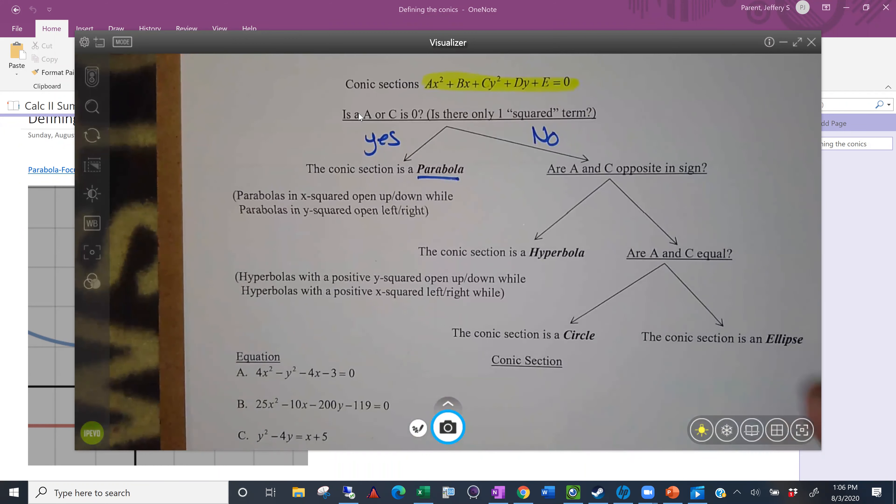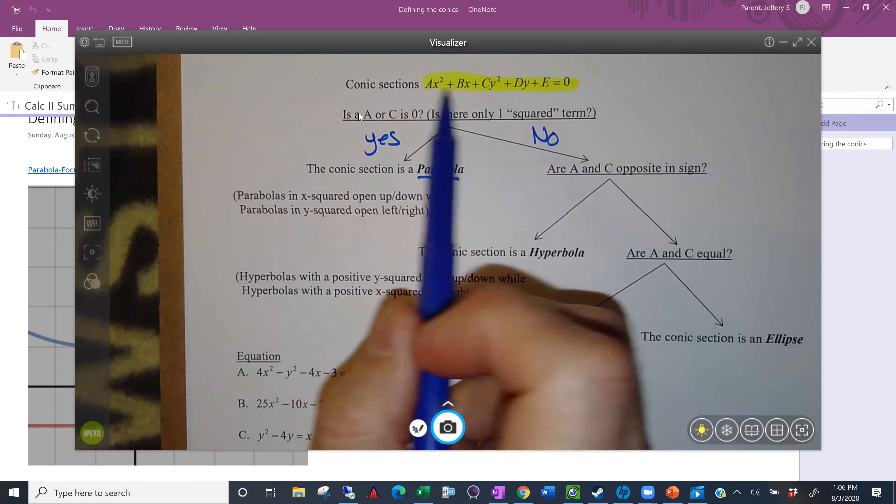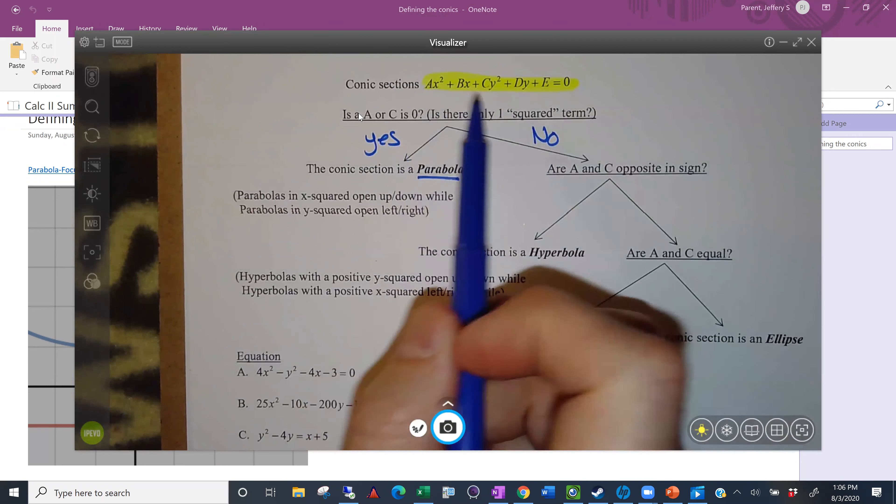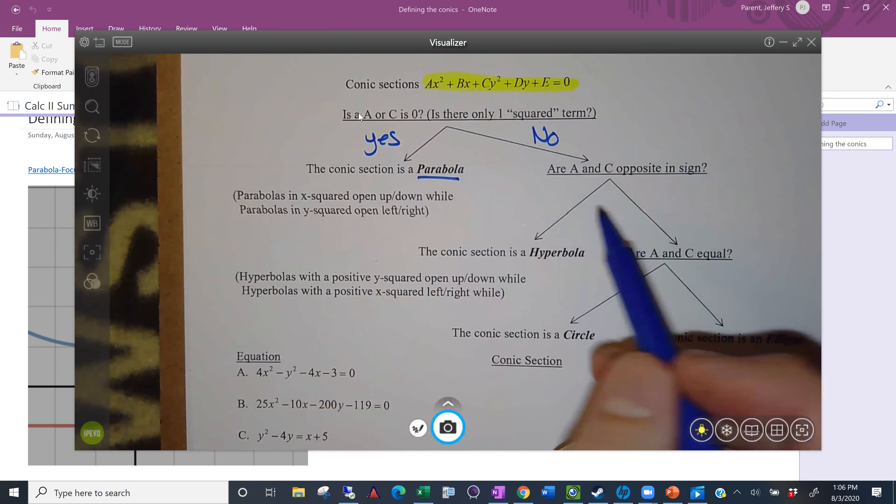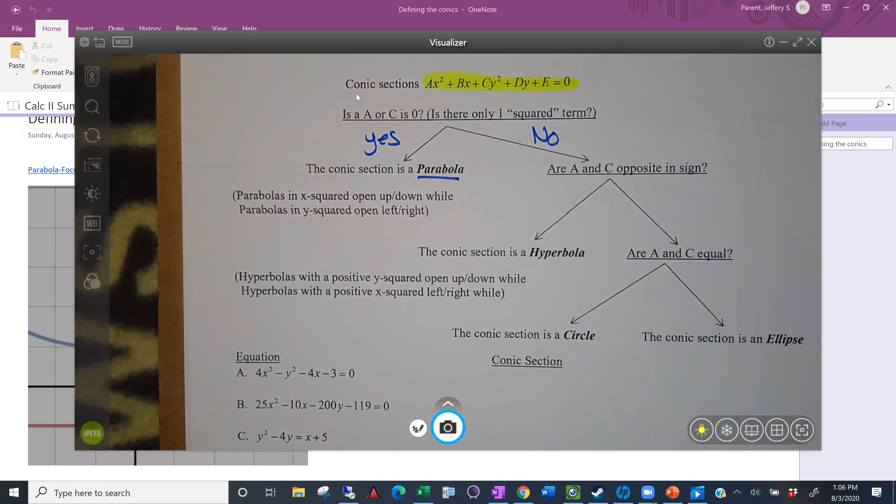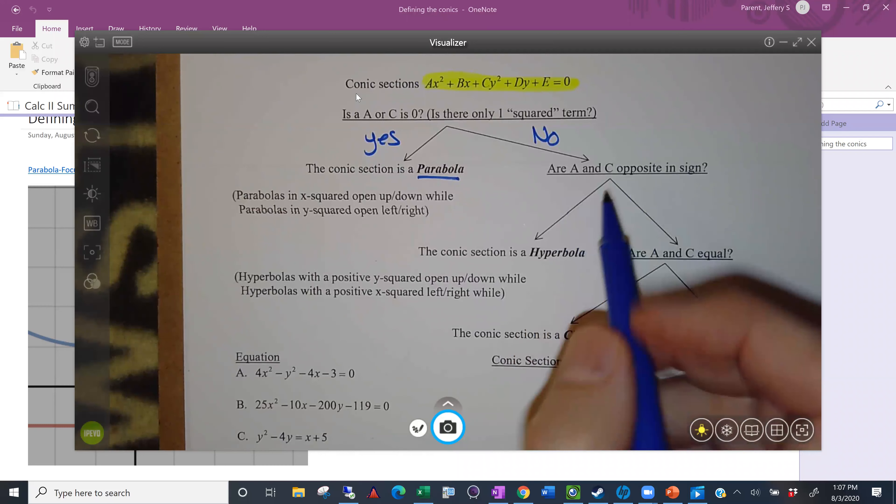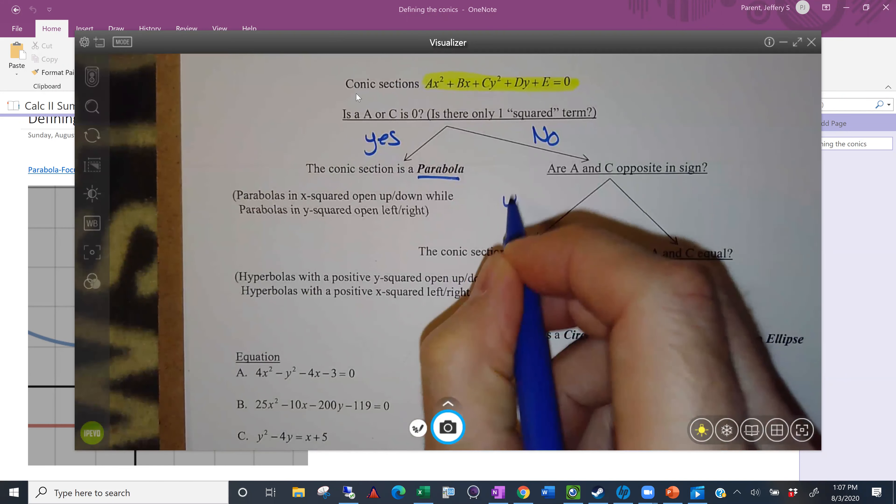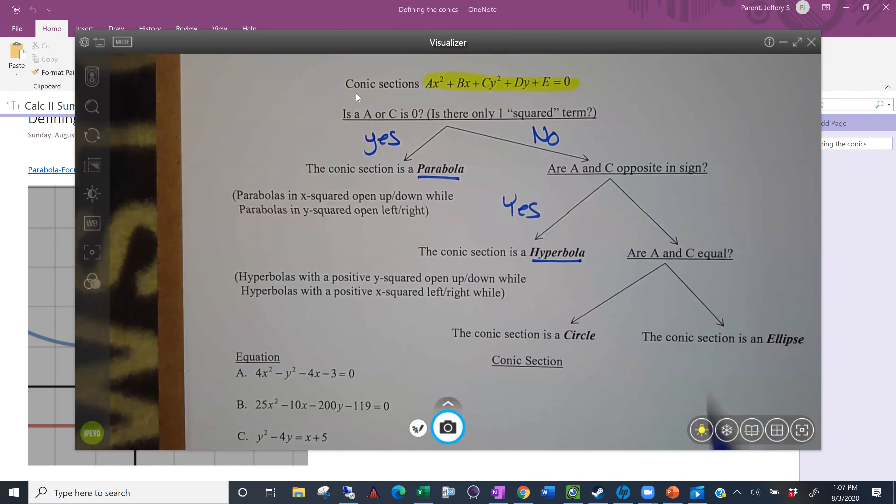With hyperbola, the squared terms are going to be opposite in sign once they're on the same side of the equation. Is there some printout that we have or are we just copying this down? Yeah, this is something that I emailed to you guys and it's also on Desire2Learn. If you go to the handouts section, it should be there for section 10.5. So, if A and C have opposite signs, then you're dealing with a hyperbola. If not, then you've got to dig still a little further.